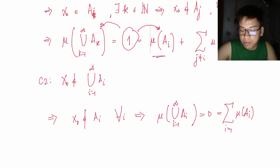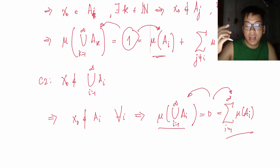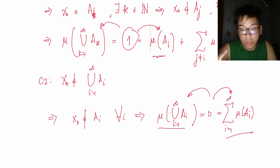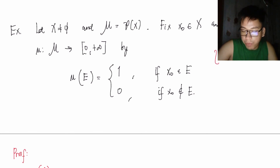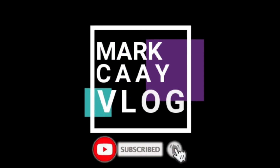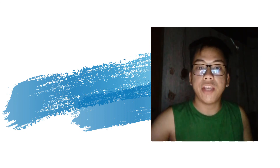Therefore, example two is a measure. In fact, this is the famous Dirac measure. That's all for now — thank you so much for watching. If you have any questions or clarifications, you can comment below. Have a great day, bye for now.